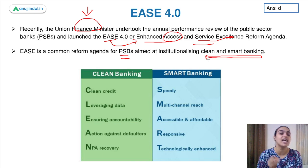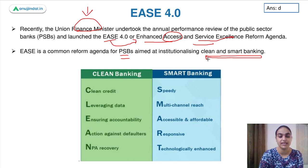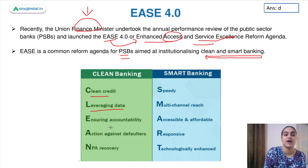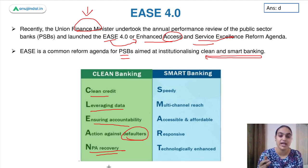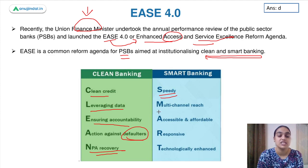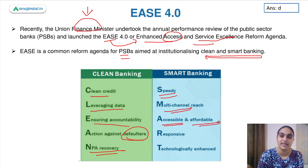What do we mean by clean and smart banking? By clean banking, I mean where there is clean credit, where there is leveraging of data, where you are ensuring accountability, where you are taking action against those who are defaulting, and where there is a proper mechanism for NPA recovery. By smart banking, I mean where there is speedy access to all kinds of banking services — speediness is ensured, there is multi-channel reach, and there is accessibility as well as affordability to different banking services.